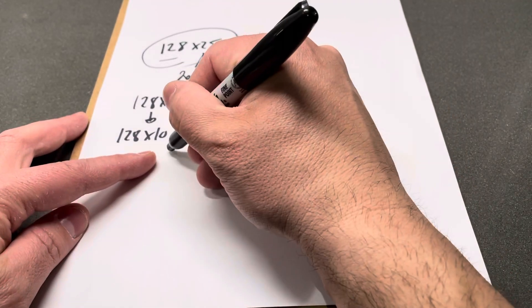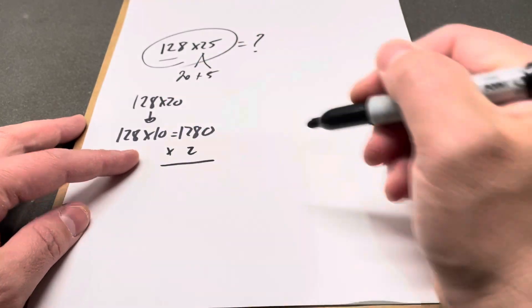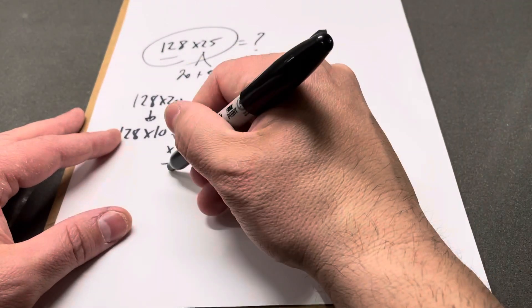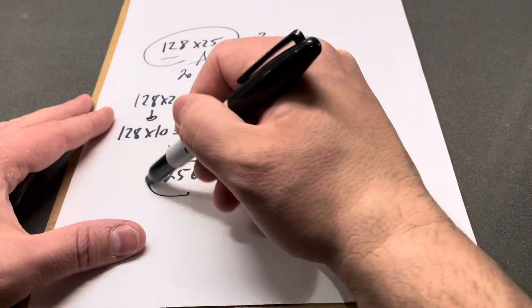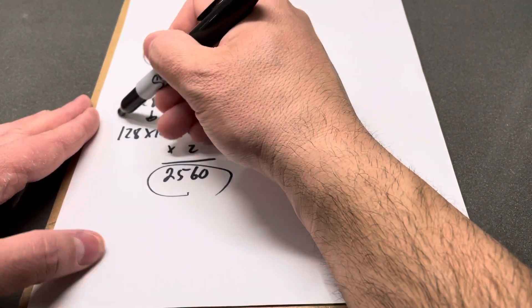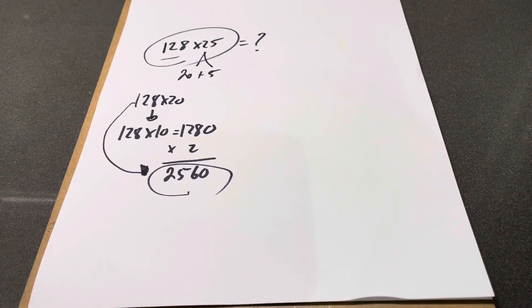So I need to take 1280 and double it, times 2. 1280 times 2 gives me 2560. So that's my first answer - 128 times 20 is 2560. I would keep that number in my head.